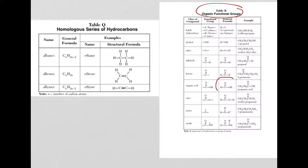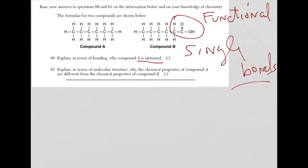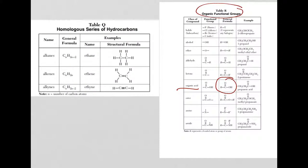That functional group is for what's called an organic acid. Reference table R has all of the functional groups. And if you go down, you'll see C double bond O-OH is for an organic acid.